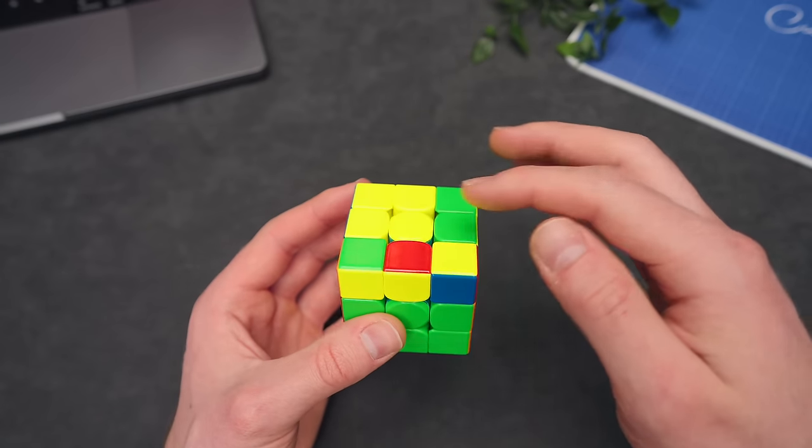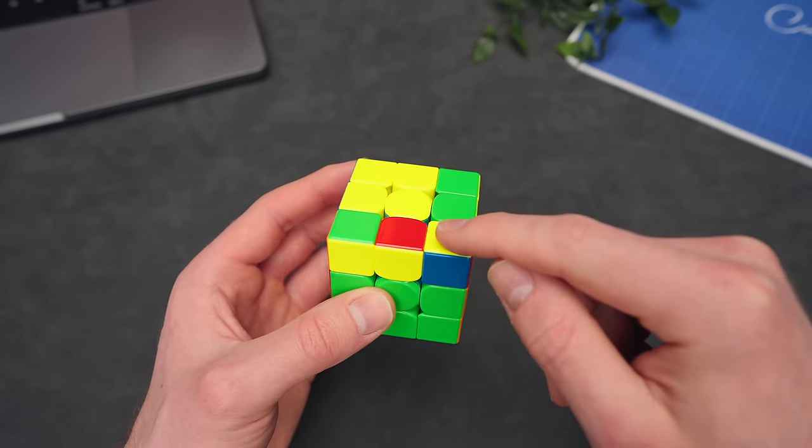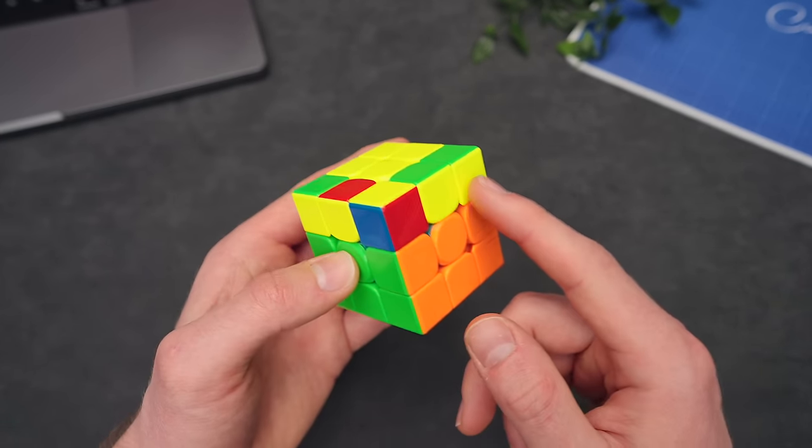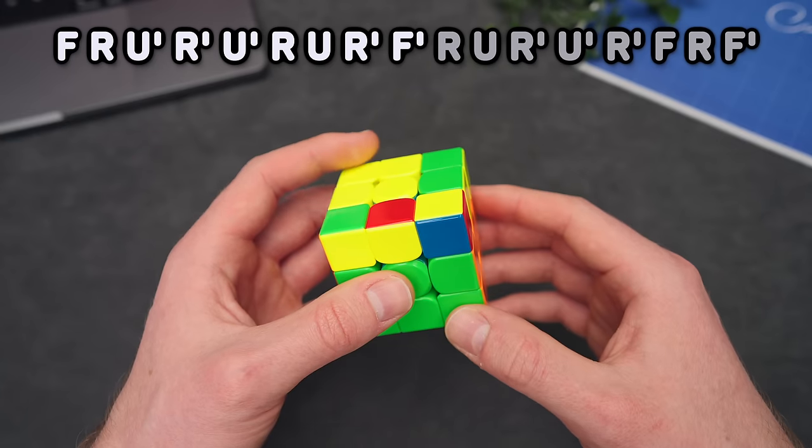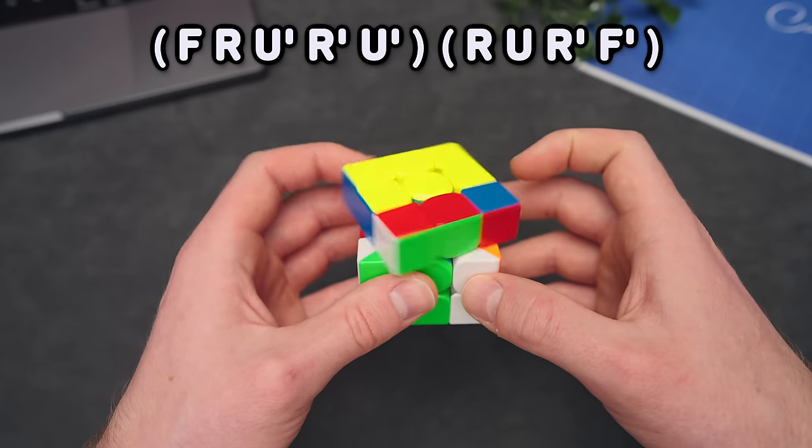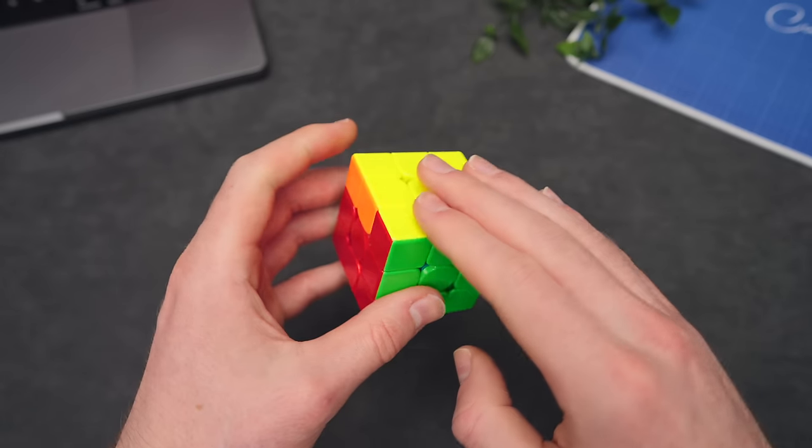But the next OLL I'm showing you, which is when you have a square right here, a dot right here and a bar here plus here, you hold it just like this with a bar in the front and a bar to the right. And now you can just do the beginning part of the Y perm, which goes like this, which solves OLL in one step.